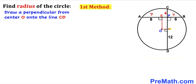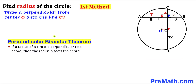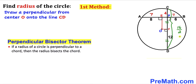This time we draw a perpendicular from center O onto chord CD at point F. By the perpendicular bisector theorem, OF bisects chord CD into two equal parts. The total distance CD is 4 plus 12, giving us 16. Dividing by 2 gives 8 units. So line segment CF is 8 units and FD is 8 units as well.